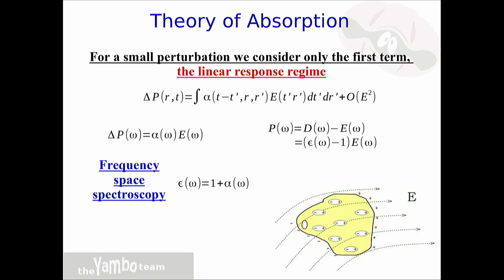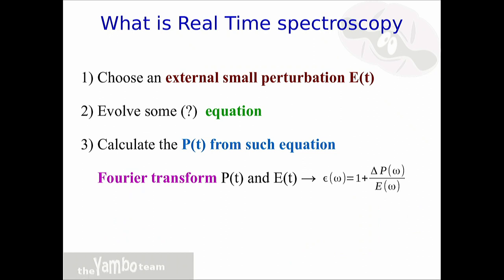This alpha(omega) can be expressed via the Fermi Golden Rule or with higher-order approaches like the RPA or the Bethe-Salpeter. But another strategy, instead of going through the calculation of this linear response quantity, is to directly compute the induced polarization and then divide it by the applied electric field, and then obtain the dielectric function via this relation. In practice, we take the perturbation—an electric field applied to our material—evolve some equation of motion, extract the time-dependent polarization, and then Fourier transform both to directly get the dielectric function of the system.